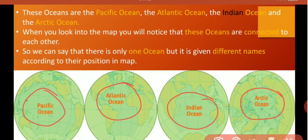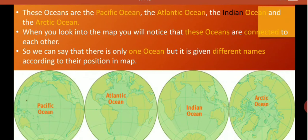Students, when you look into the map you will notice that these oceans are connected to each other. So we can say that there is only one ocean but it is given different names according to their position in map.